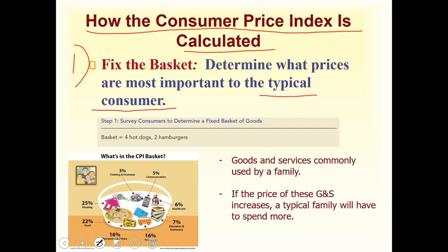A typical consumer is someone who does not purchase a Lamborghini car or a Rolex watch. These are two goods which are super expensive and are mostly purchased only by the elite class — the richest in a country. So these goods, and many others that a typical consumer doesn't purchase, are not included in the basket.